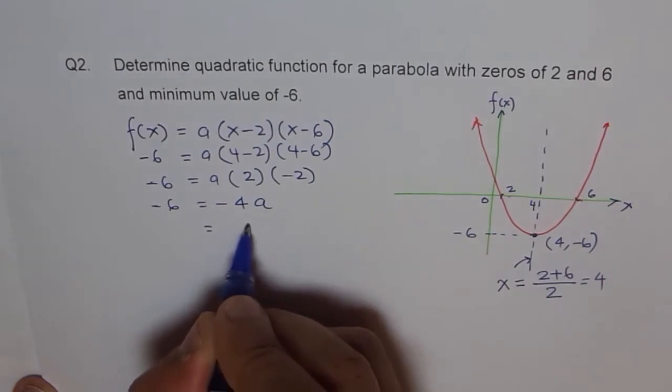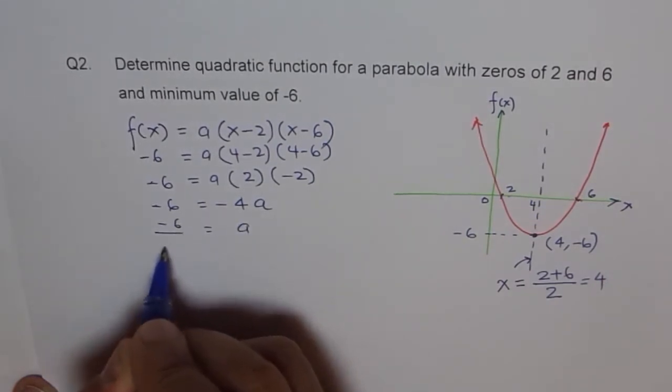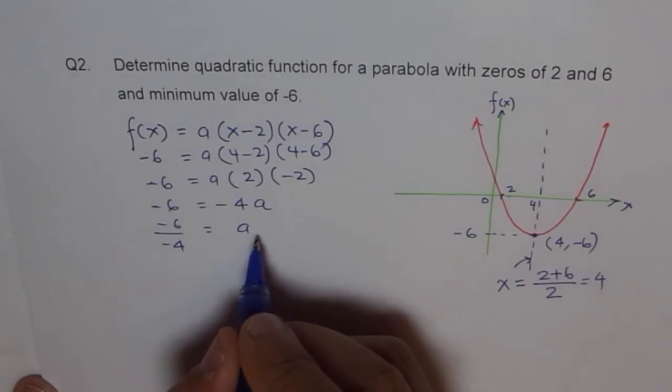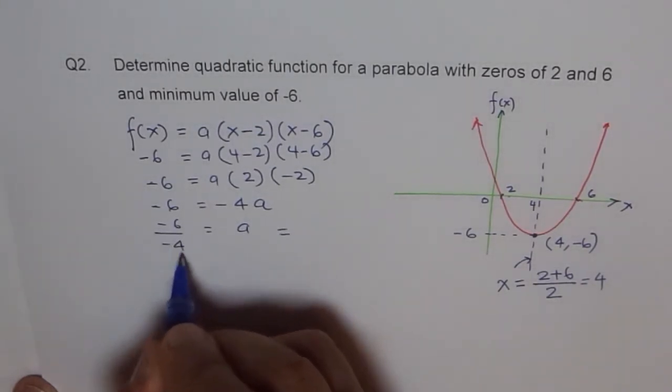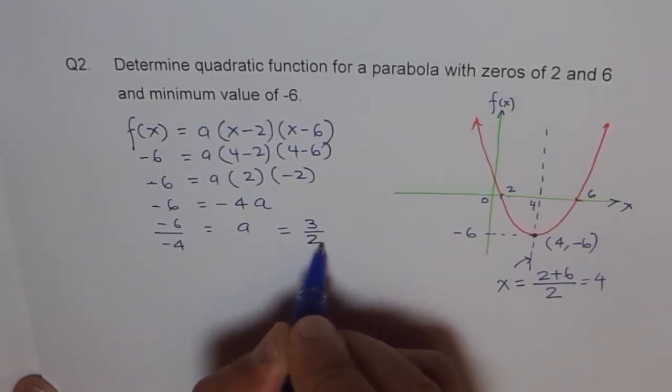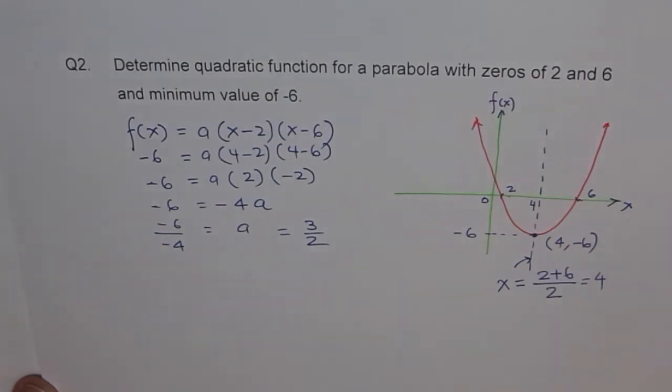And therefore, a equals minus 6 divided by minus 4, and so we can write this as equal to 3 over 2. Yeah, 3 over 2. Now, you know a, and you know all this, and therefore...